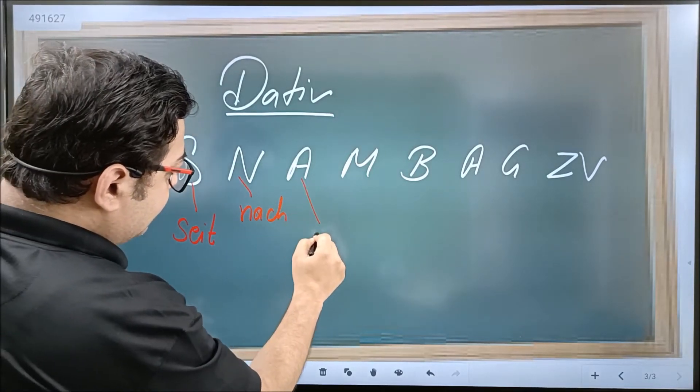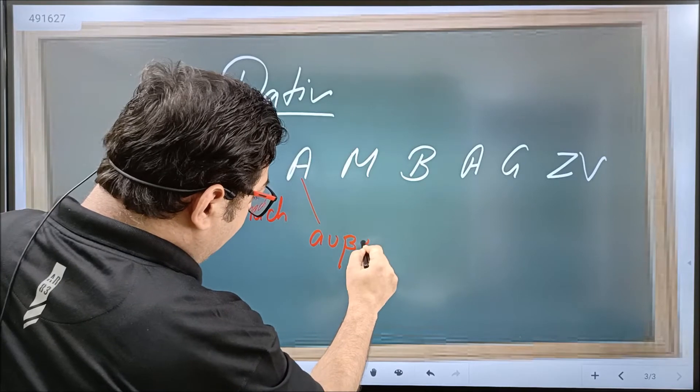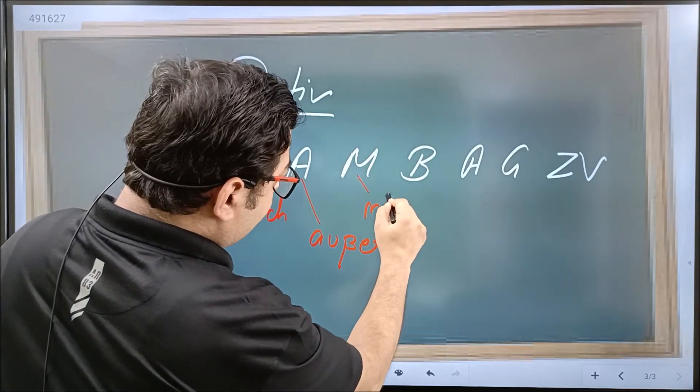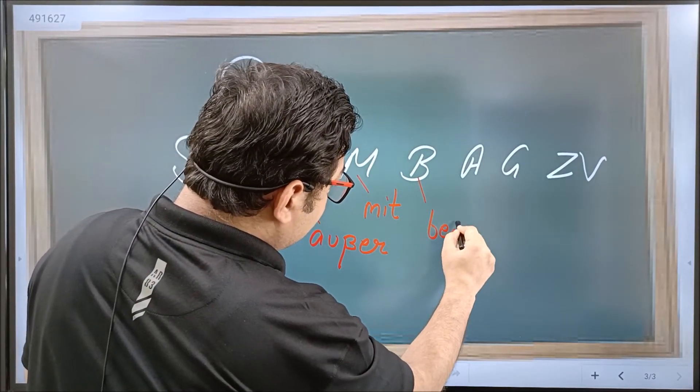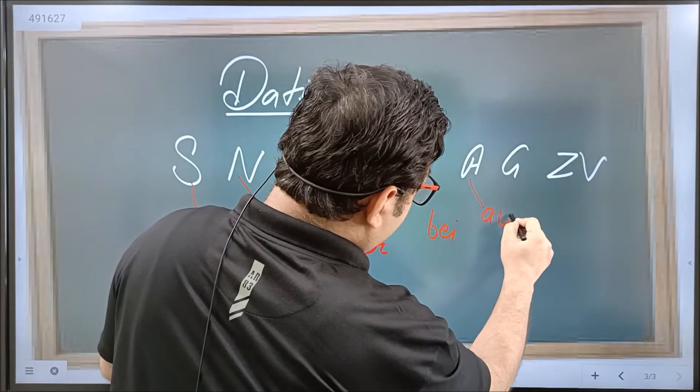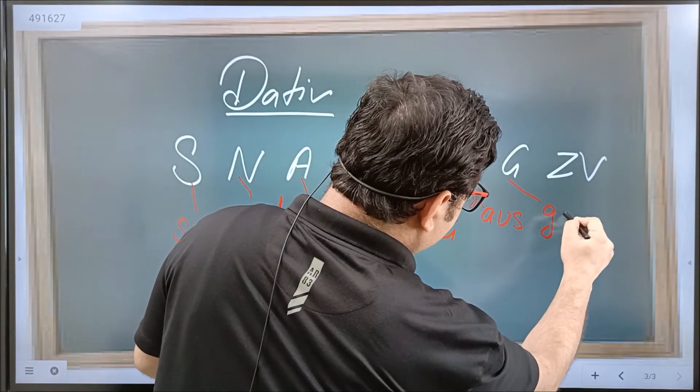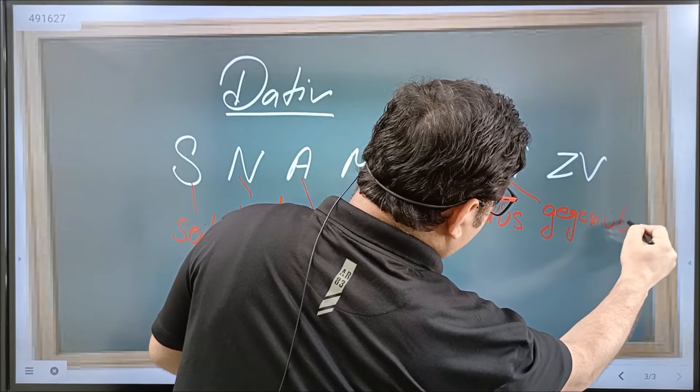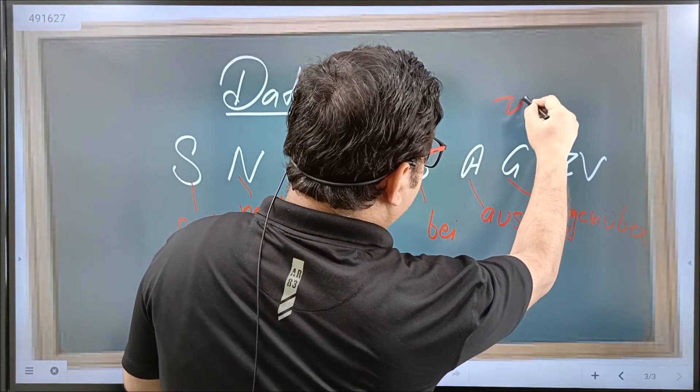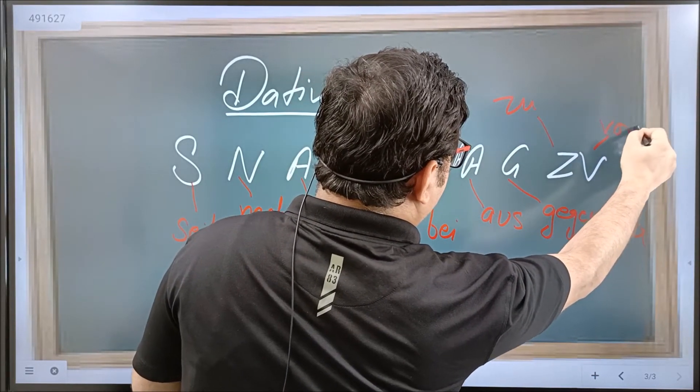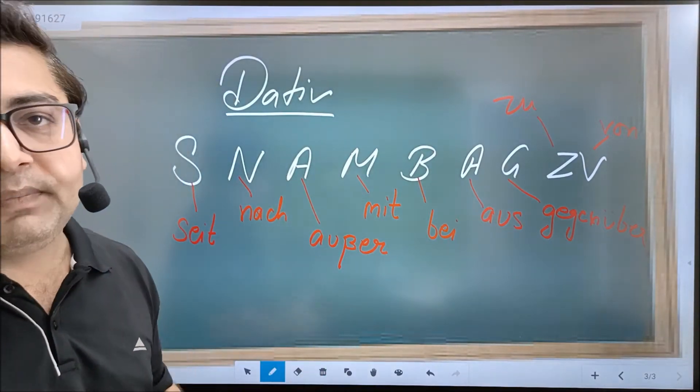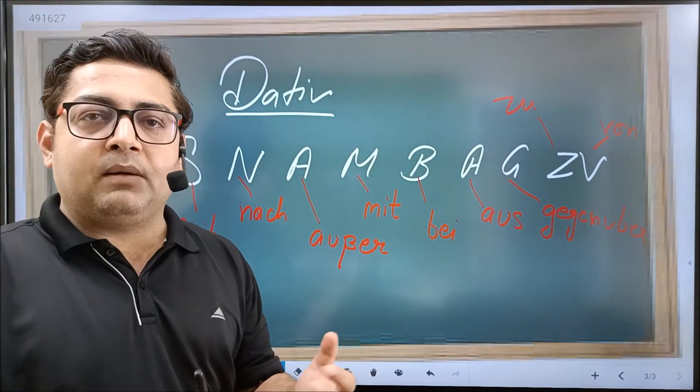Where S stands for seit, N stands for nach, M is mit, B is bei, A is aus, G is gegenüber, Z is zu, and V is von.